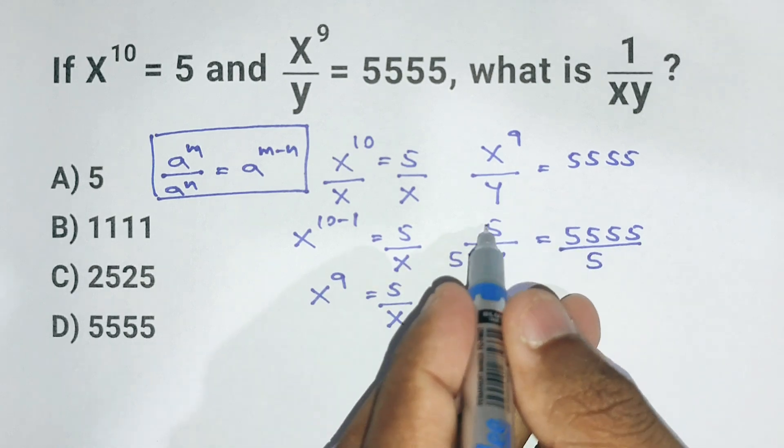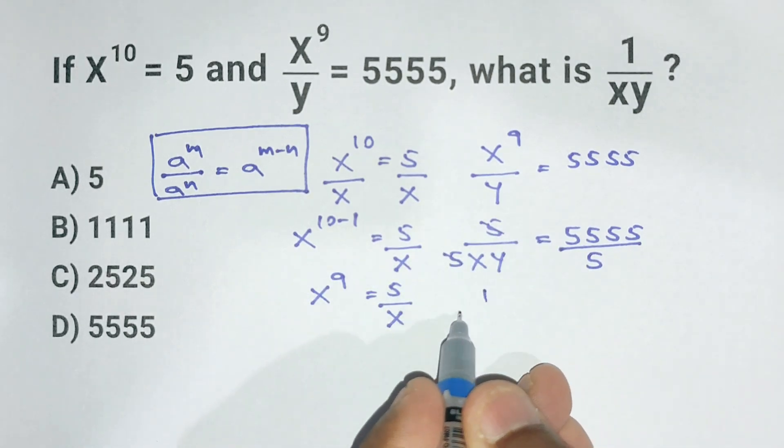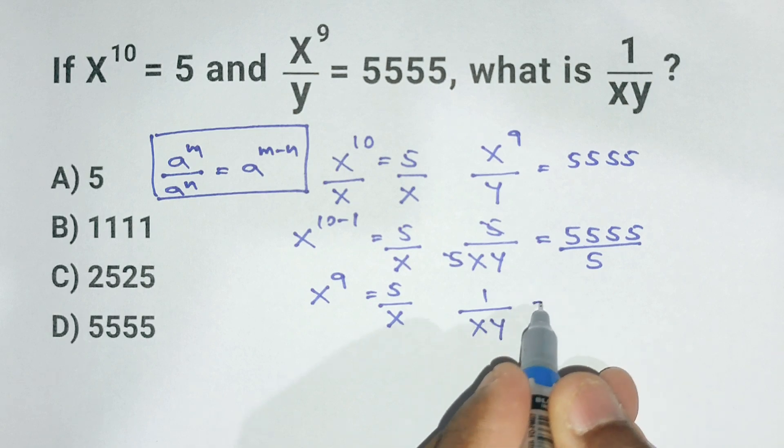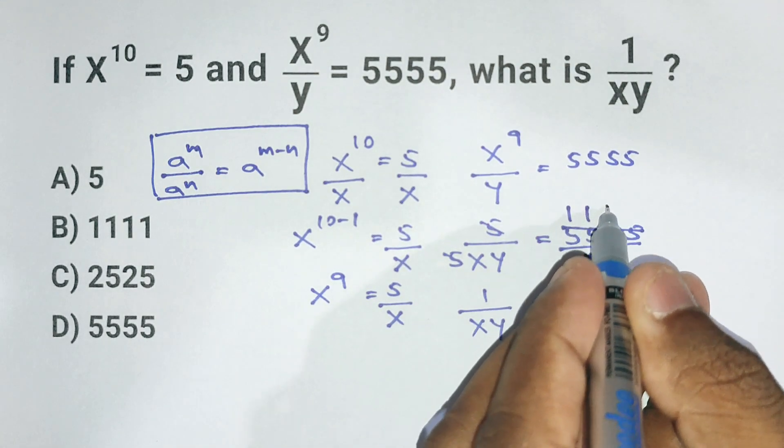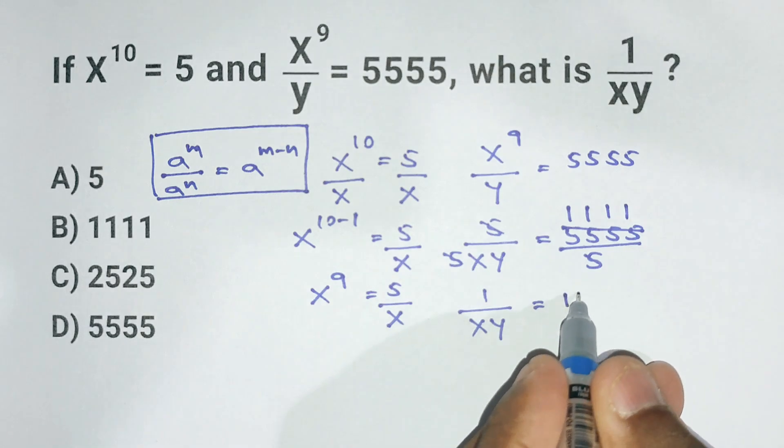On the left we get 1 divided by x times y, and on the right 5555 divided by 5, and that gives us 1111. And that's the answer.